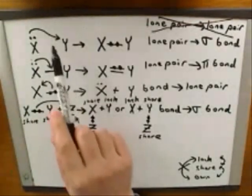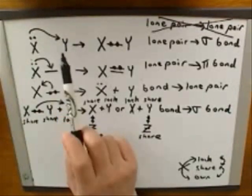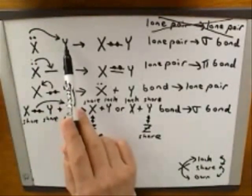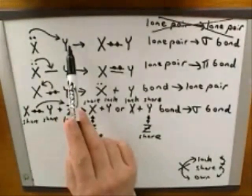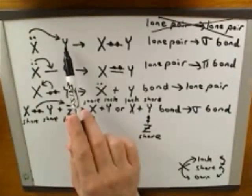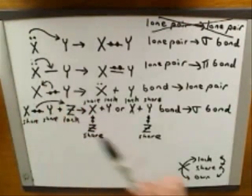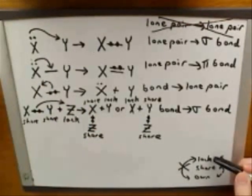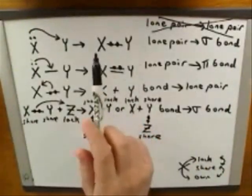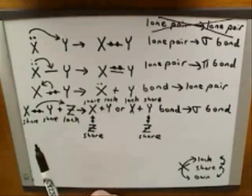Here we have an example where the head of the arrow is on Y, so Y is going to be gaining more possession of the electrons. But is it going to gain possession by sharing them in a bond or by owning them in a lone pair? Let's go through our thought process. In the starting materials, Y completely lacks any possession of this pair of electrons. So if it's going to be gaining more possession, it must end up sharing them in a bond. And that's what happened — Y started with a lack of possession and ended up sharing them in the bond.